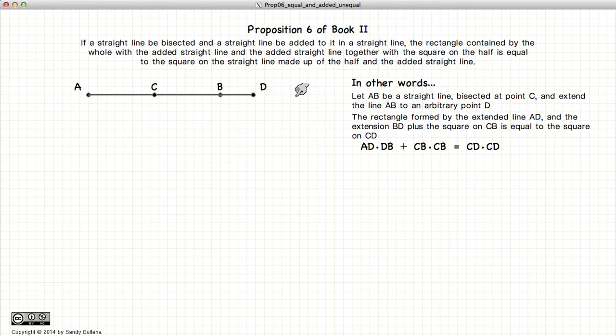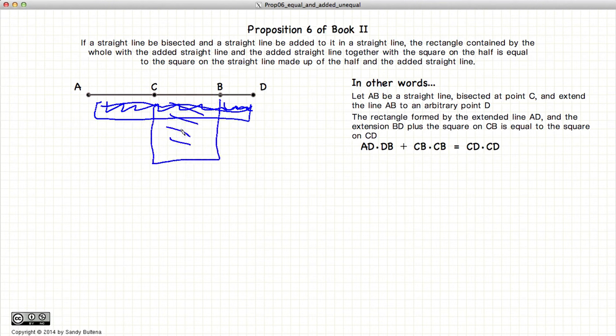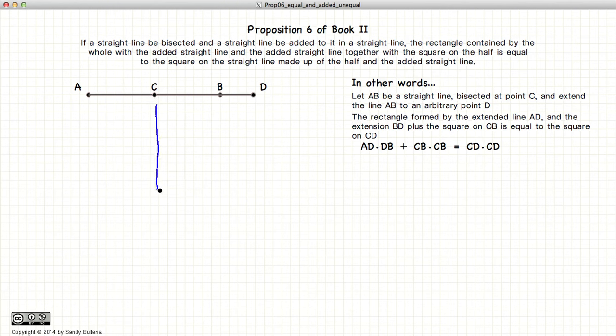This proposition states that if we have a line AB that is bisected at point C and has an extension added to it to point D, then AD times BD, or in other words our little rectangle here, plus the square of CB will be equal to the square of CD.